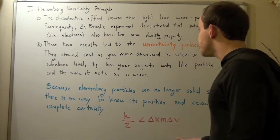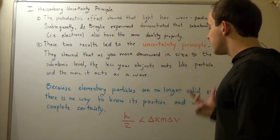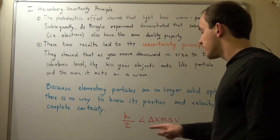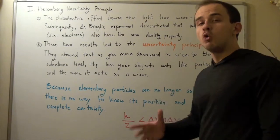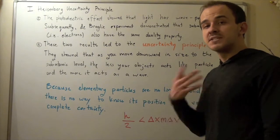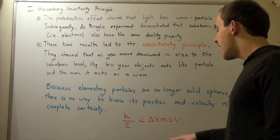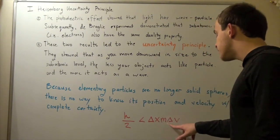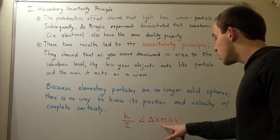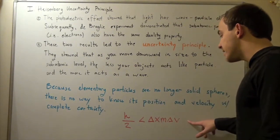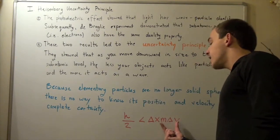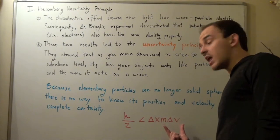The formula for this uncertainty principle is the following: Planck's constant, a very very small number, divided by two, is always less than our change in x — the uncertainty of our position — times mass, times change in velocity. Remember, mass times velocity is momentum, so this is the change in momentum. In other words, this is the uncertainty of our position, and this is the uncertainty of our momentum, or velocity.